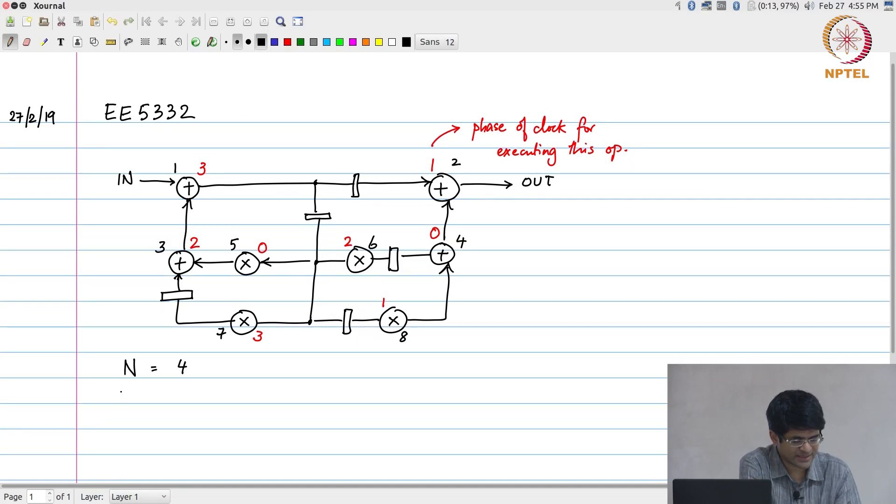The folding sets themselves are S1 for the adder corresponds to operation number 4, then operation number 3 and operation number 1, this is for the adder and S2 is equal to 5, 8, 6 and 7 for the multiplier.